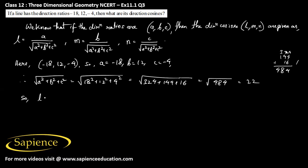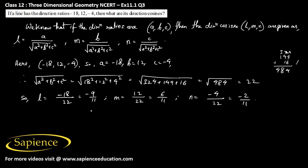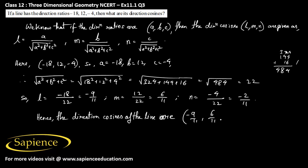Therefore, l = -18/22 = -9/11, m = 12/22 = 6/11, and n = -4/22 = -2/11. Hence the direction cosines of the given line are -9/11, 6/11, and -2/11. This is the final answer.